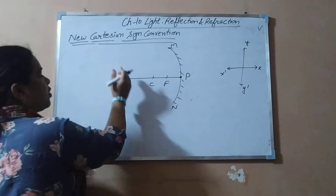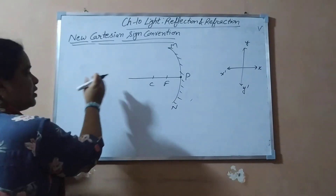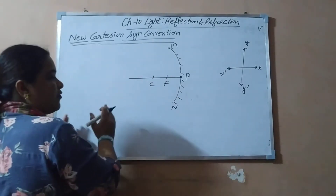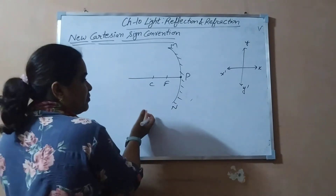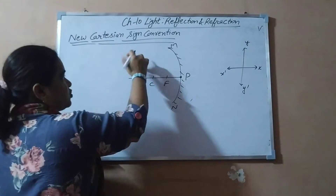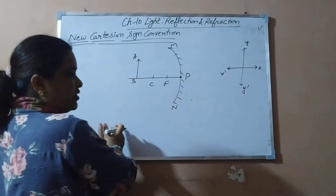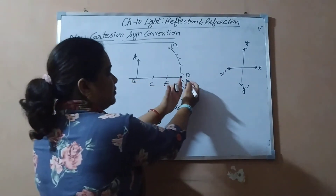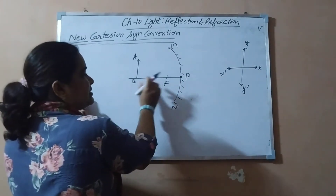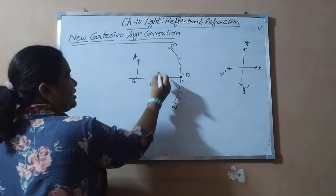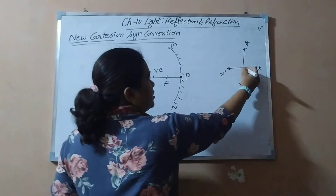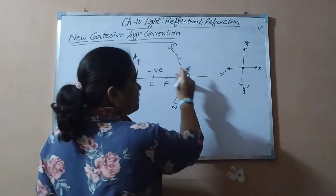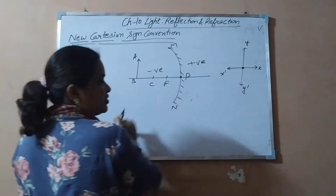The next rule is that the object is always placed towards the left of the mirror. AB is the object, which is always placed towards the left of the mirror. The distances which are towards the left side of the pole are taken as negative. And the distances which are towards the right of the pole are taken as positive.